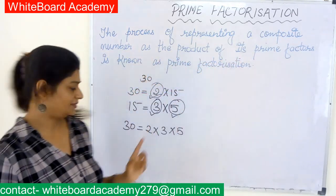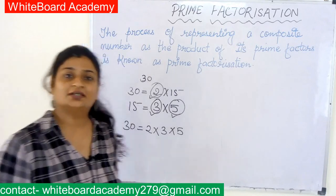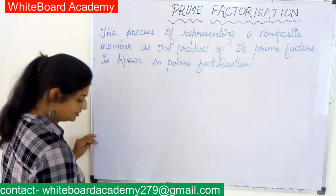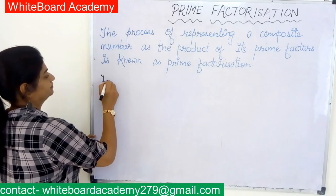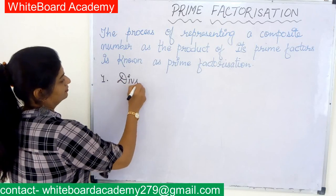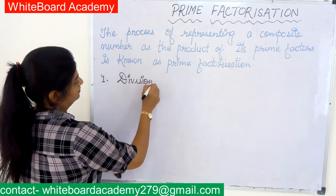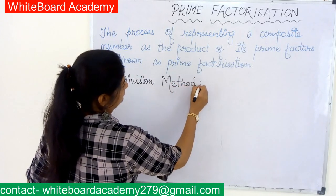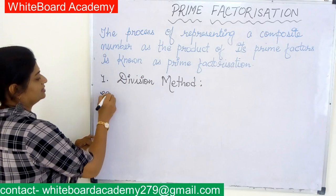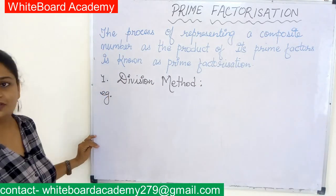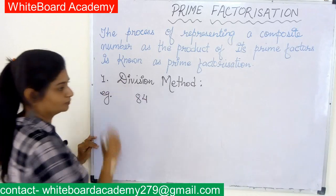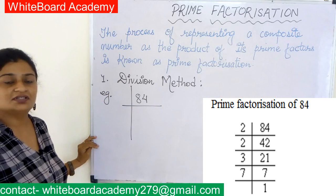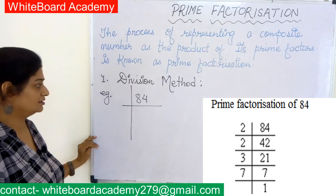There are two methods of finding prime factorization. The first one is the division method. Let's take one example: we have to find the prime factorization of 84. We should always start with the smallest prime factor.